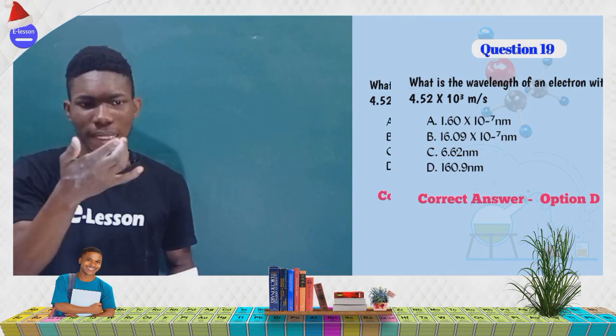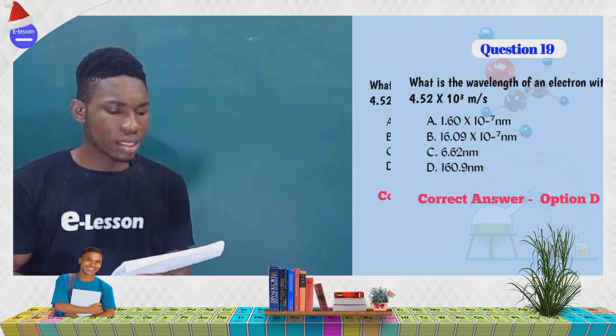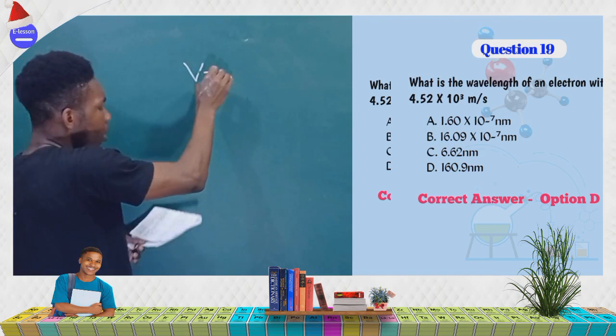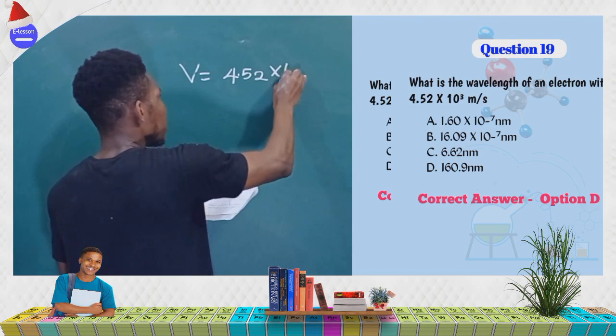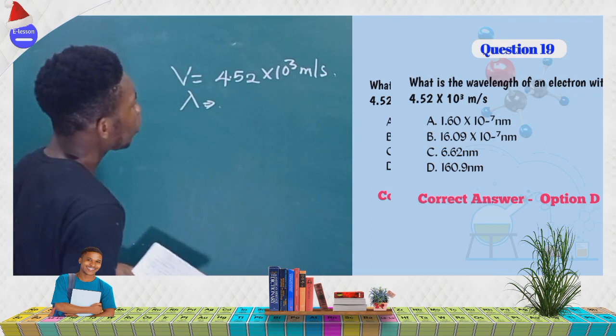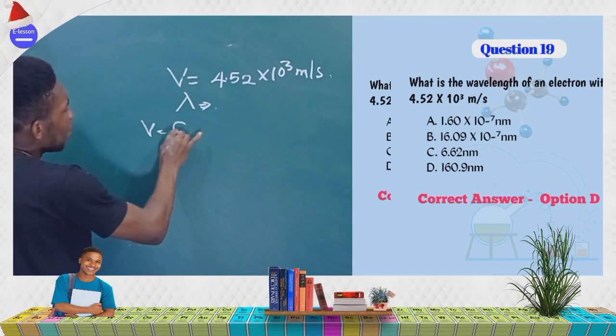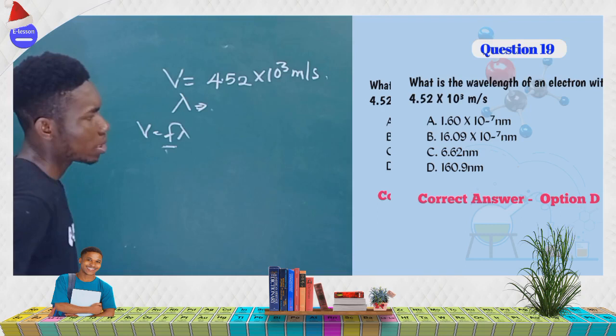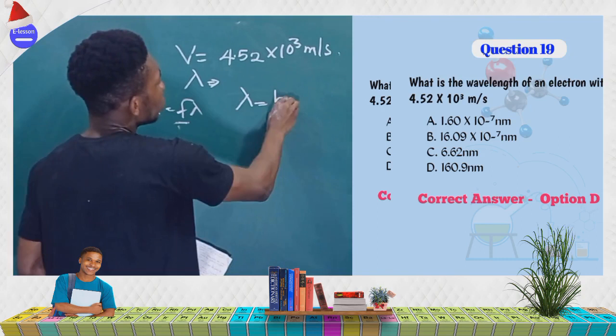Next question: what is the wavelength of an electron with velocity 4.52 × 10³ m/s? We are asked for the wavelength. You might think to use v = fλ, but we don't know the frequency, so we can't use that formula directly.